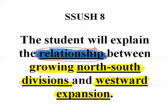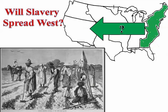The relationship between North-South divisions and westward expansion coupled together caused a lot of problems. One of the biggest and most divisive questions was: will slavery spread westward? As we moved west and new territories became states, will slavery be allowed there? The North said no; the South said yes. Big arguments, big sectional tensions, big North-South divisions.